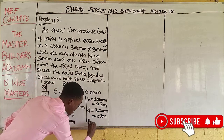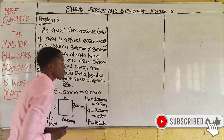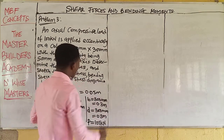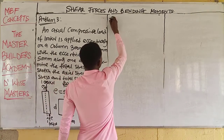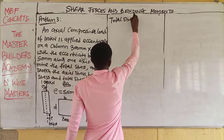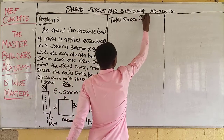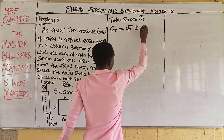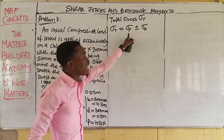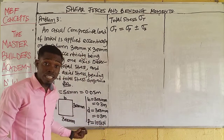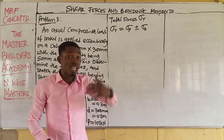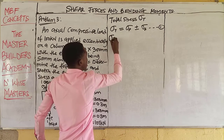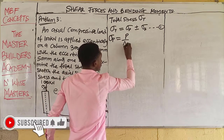We are also given an axial load of 100 kN. We are asked to calculate the total stress. Now that we have eccentricity, the total stress is equal to the primary stress plus or minus the secondary stress. The primary stress is the axial stress, and it equals the load over the cross-sectional area.